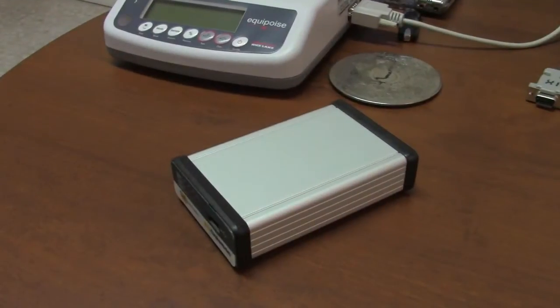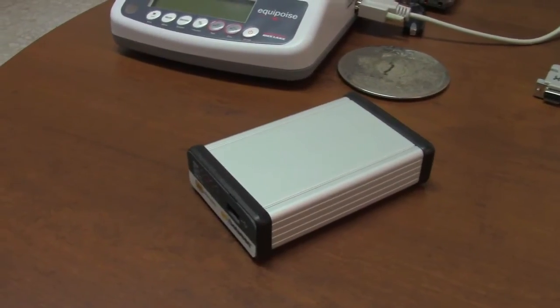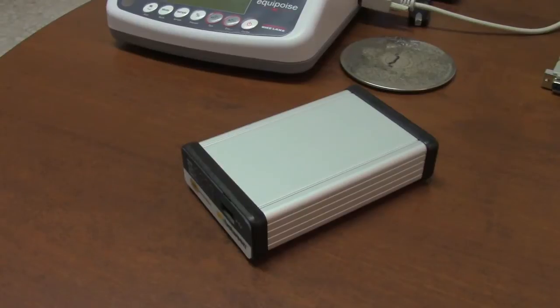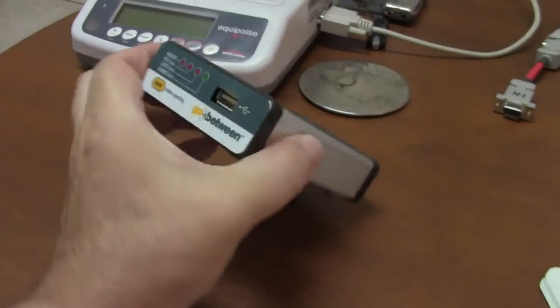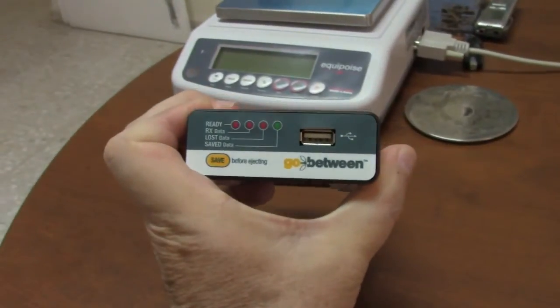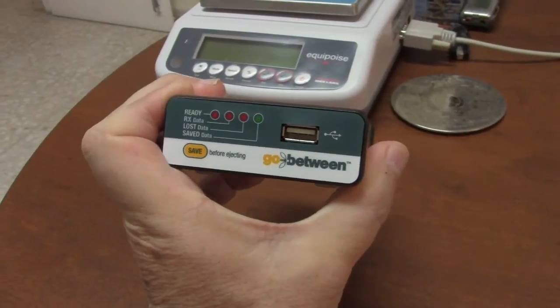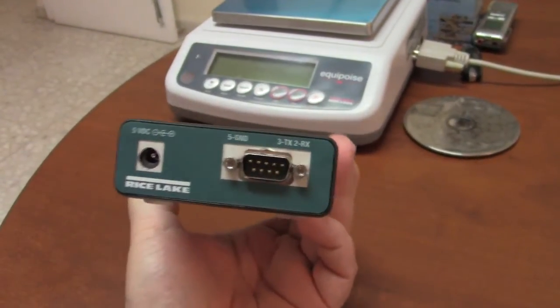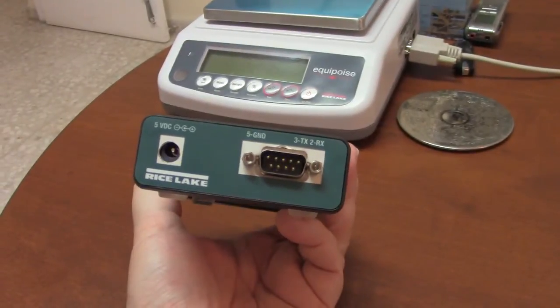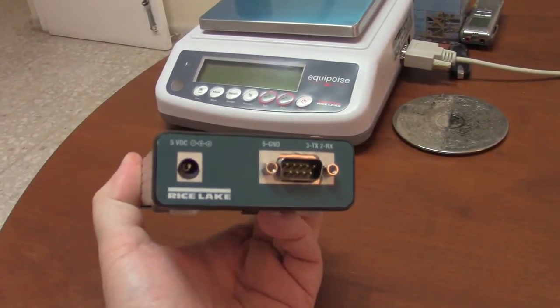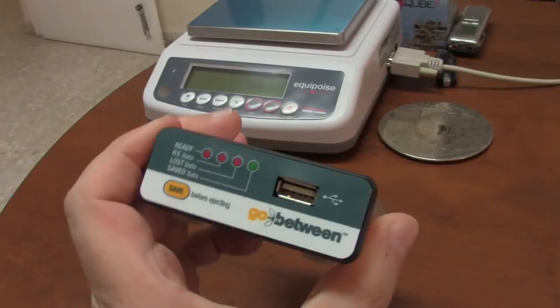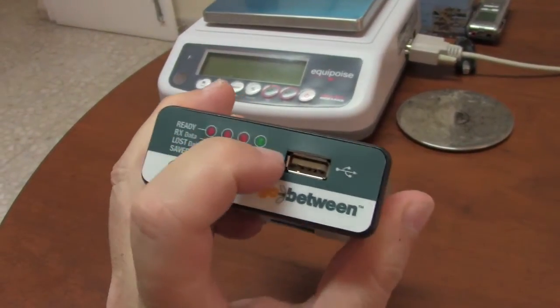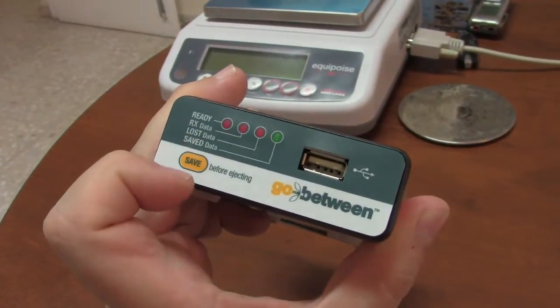We are going to demonstrate the go-between office and lab application. You can see here the front part of the go-between and the rear. You will have the serial port output and input of a power supply. You have four LEDs on the front.